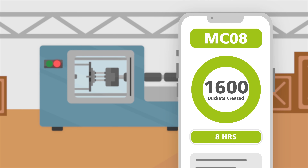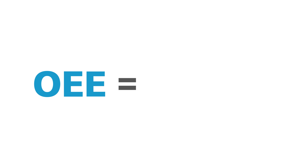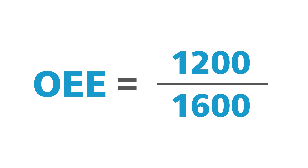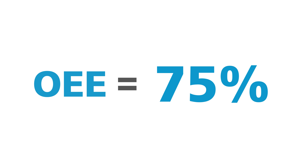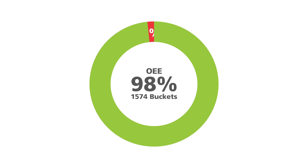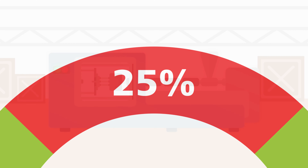However, if you only manage to make 1,200 then the efficiency or effectiveness of your process is only 75%. This indicates a 25% loss — but what's causing it?